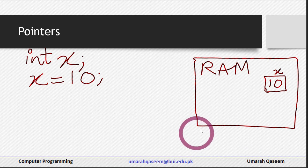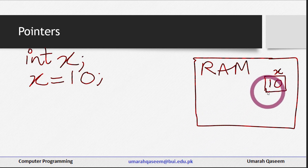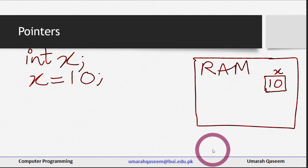And also this place of x in RAM, or this location in RAM, will always have some address — some value with which we can refer to it. So let's say the address of this variable is 1010. Let's take this number for simplicity.